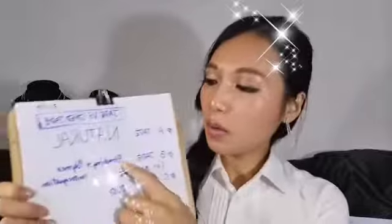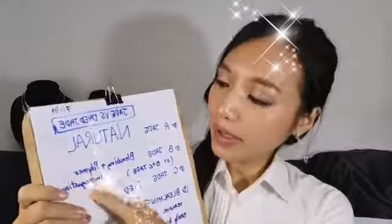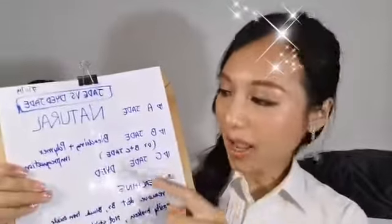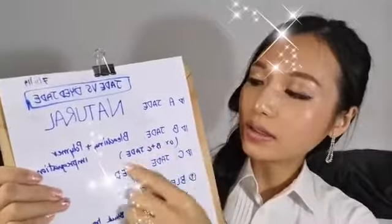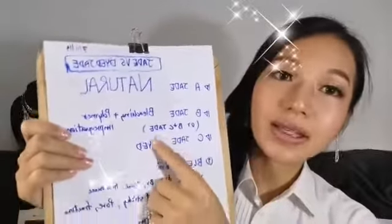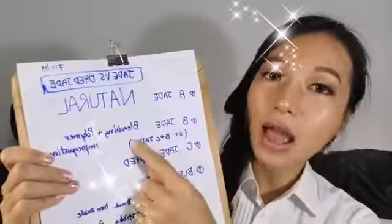I will repeat again: A means natural. B means bleaching and polymer impregnation. And C jade is dyed. Sometimes they use a mix — bleaching, polymer impregnation, and then dye. So that type is B plus C jade.